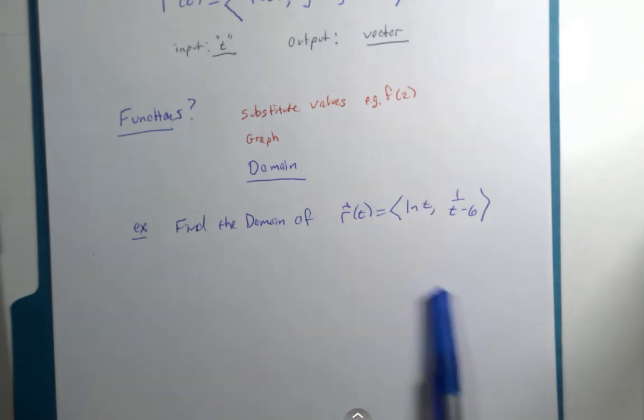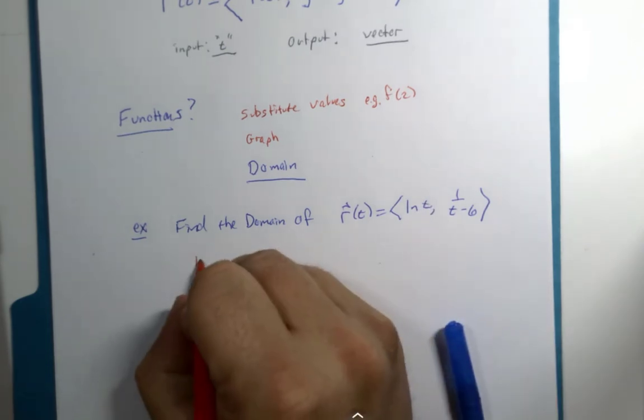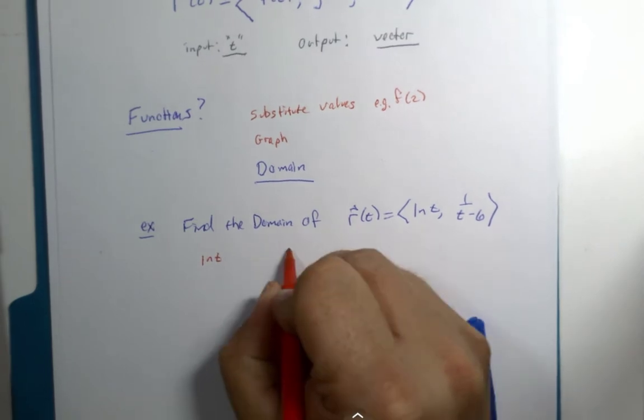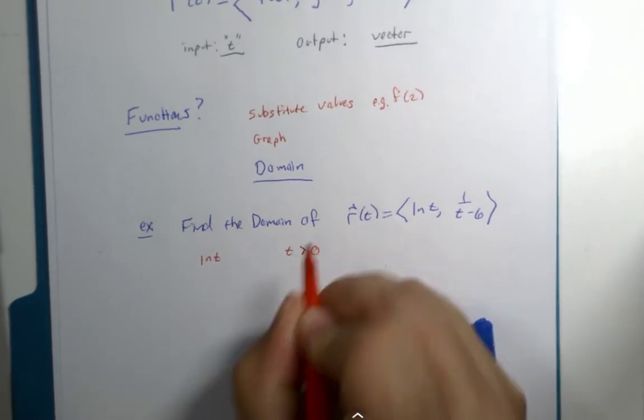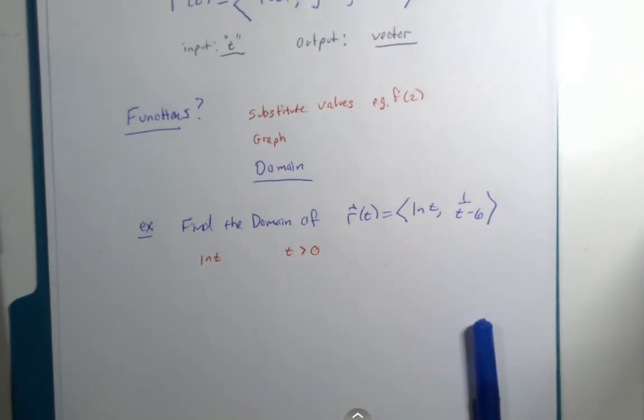But I will tell you that for the natural log function, t must be positive. There are no real values for natural log of a negative or natural log of zero.